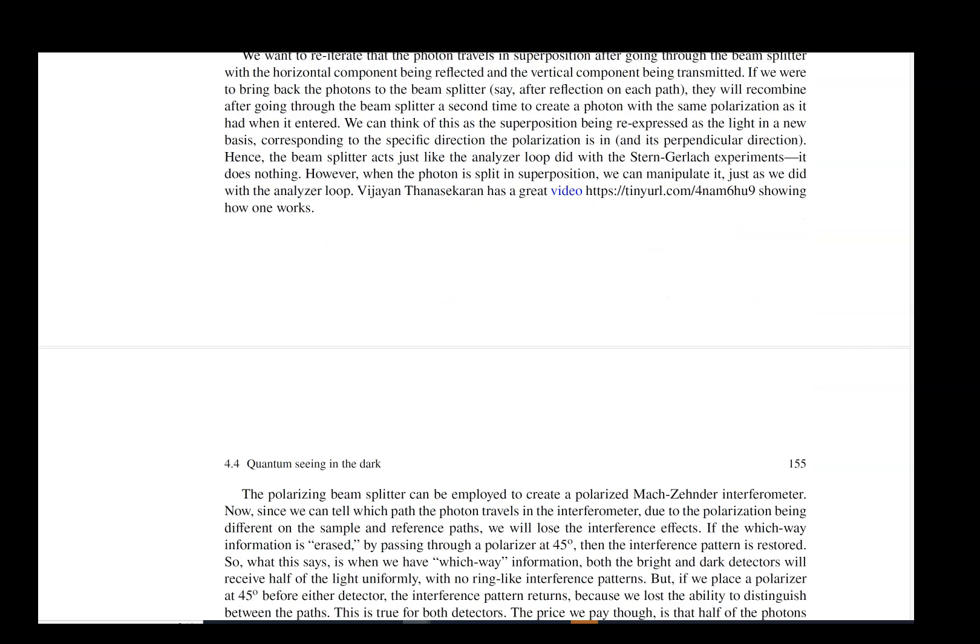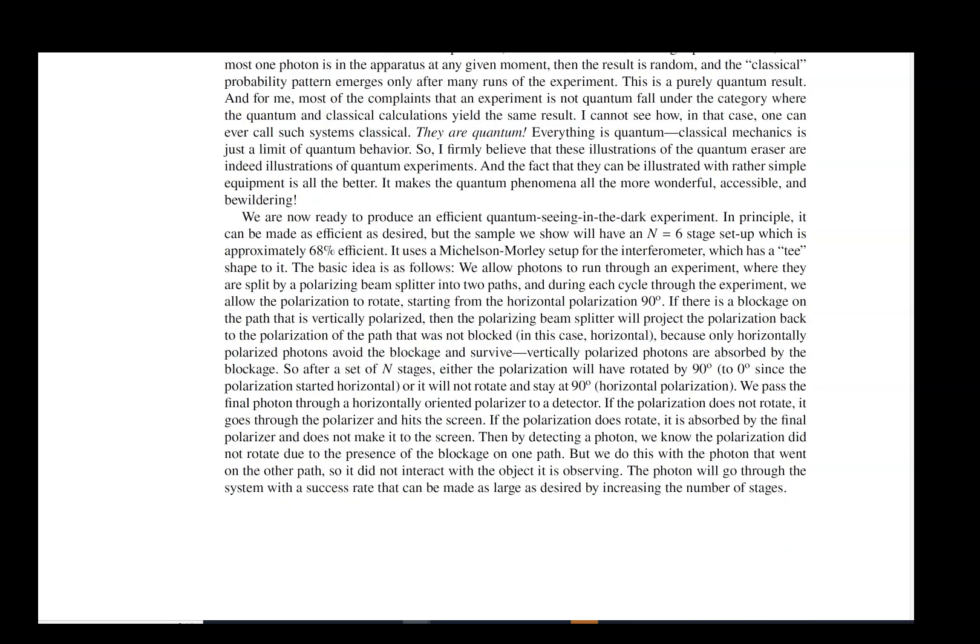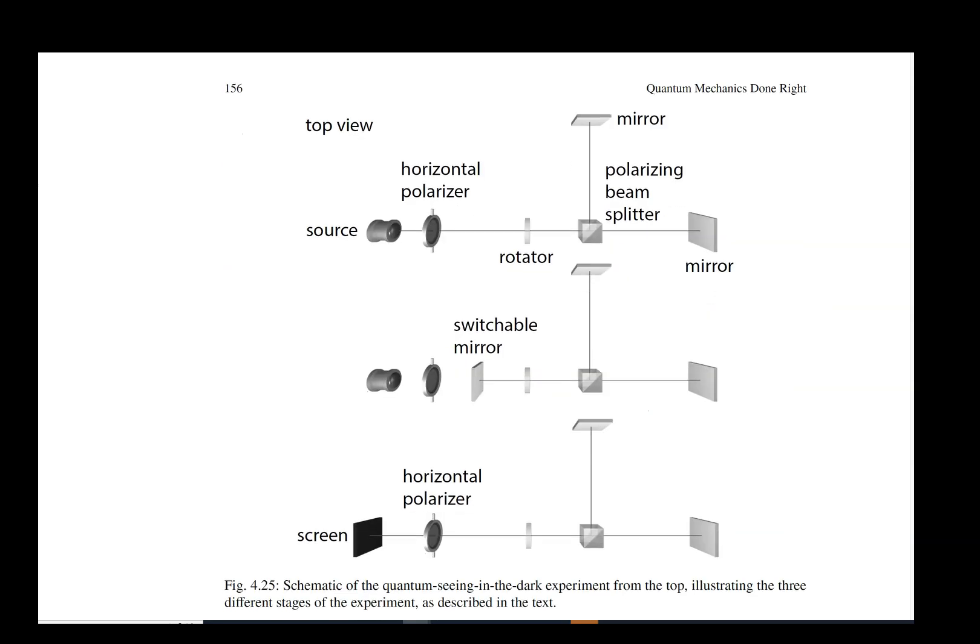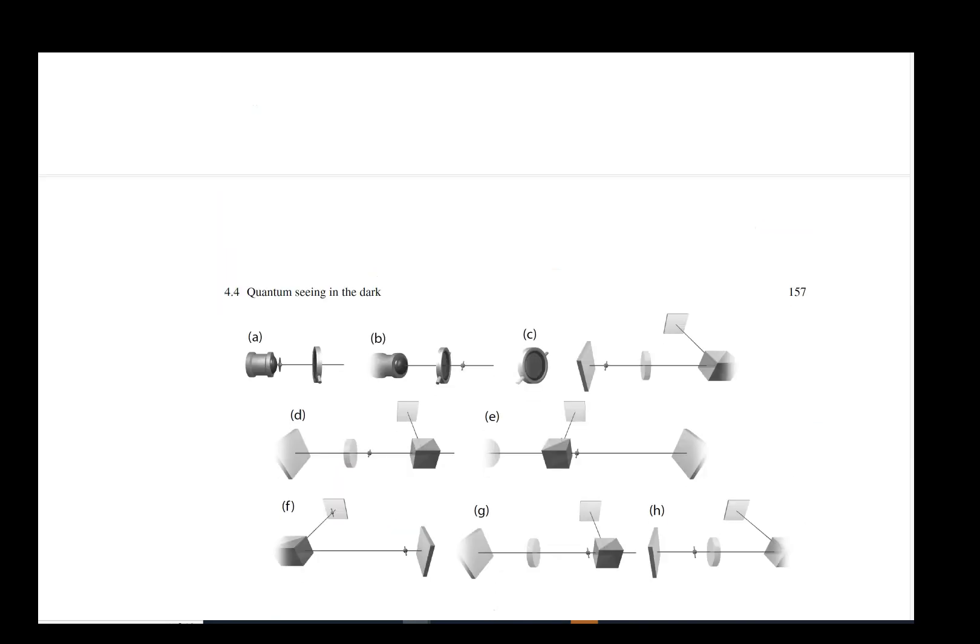By using that you can create this remarkable experiment that will allow you to see an obstruction that will be placed on that vertical line between the polarizing beam splitter and the mirror, and you can see whether it is there or whether it is not there.